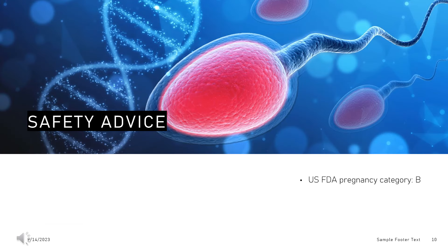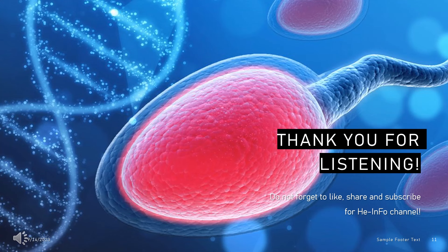Safety Advice: U.S. FDA pregnancy category B — use only during the first three months of pregnancy. This drug has been used to support embryo implantation and pregnancy maintenance, and should not be needed once there is adequate secretion of placental progesterone.